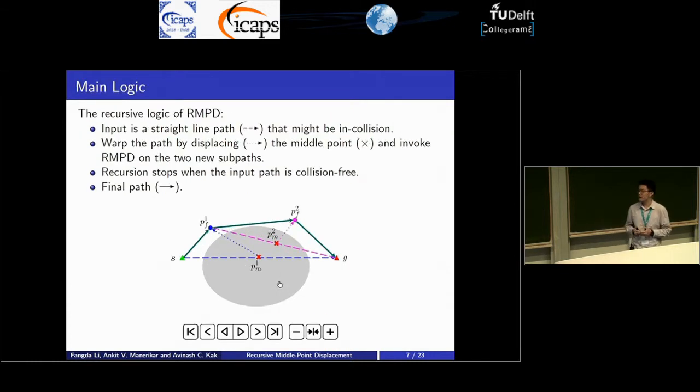To give a step-by-step explanation of the algorithm, here we can see the diagram. The input to the algorithm is always a straight line path, as we can see here from S to Z. Apparently this path is in collision with obstacle. What we want to do is make a detour around it. The way we are doing it is by warping the path by displacing the middle point PM to a new middle point PF that's collision free. Subsequently we have two new sub paths from S to PF1 and from PF1 to Z.